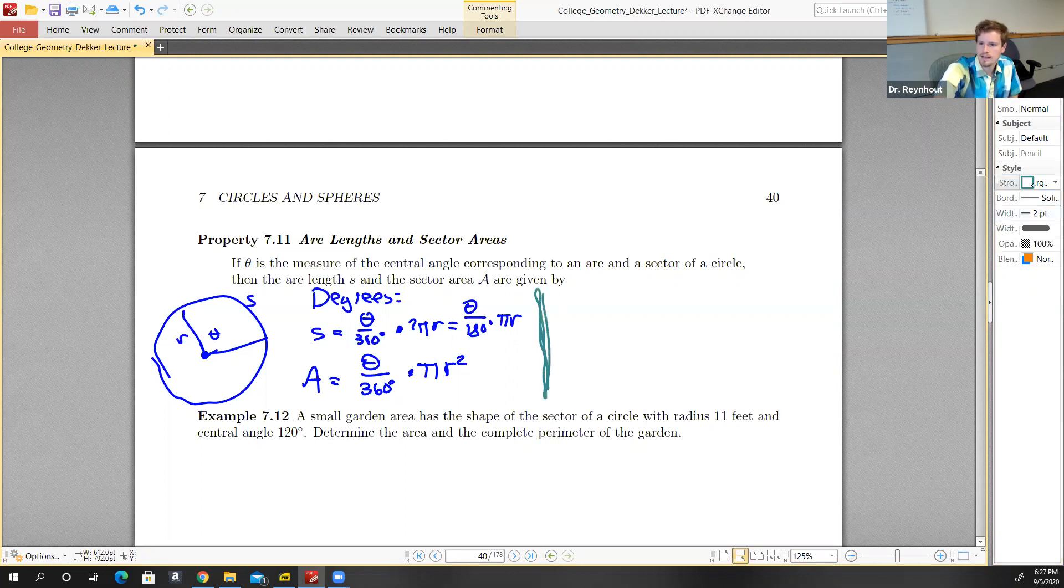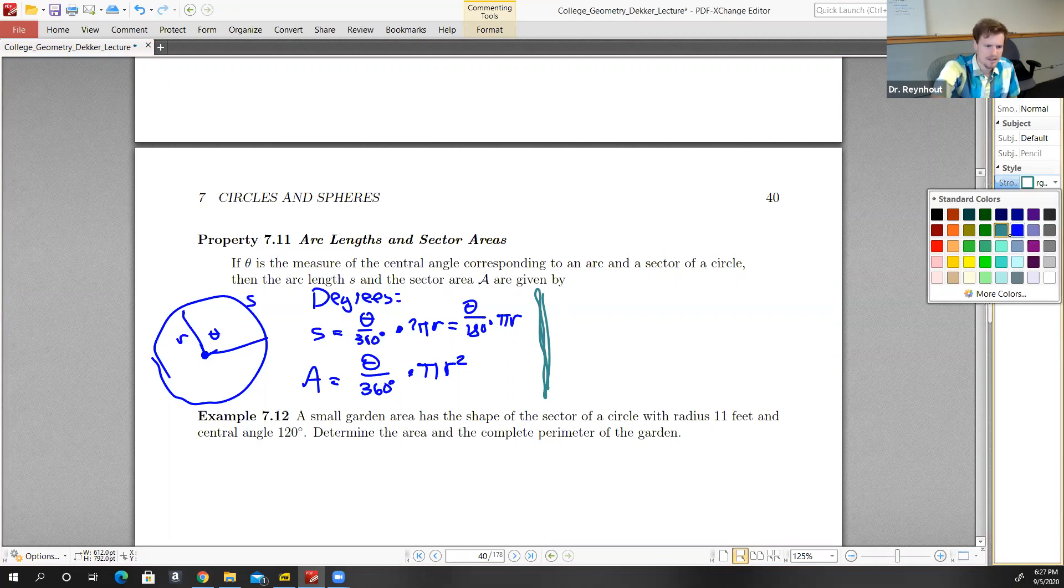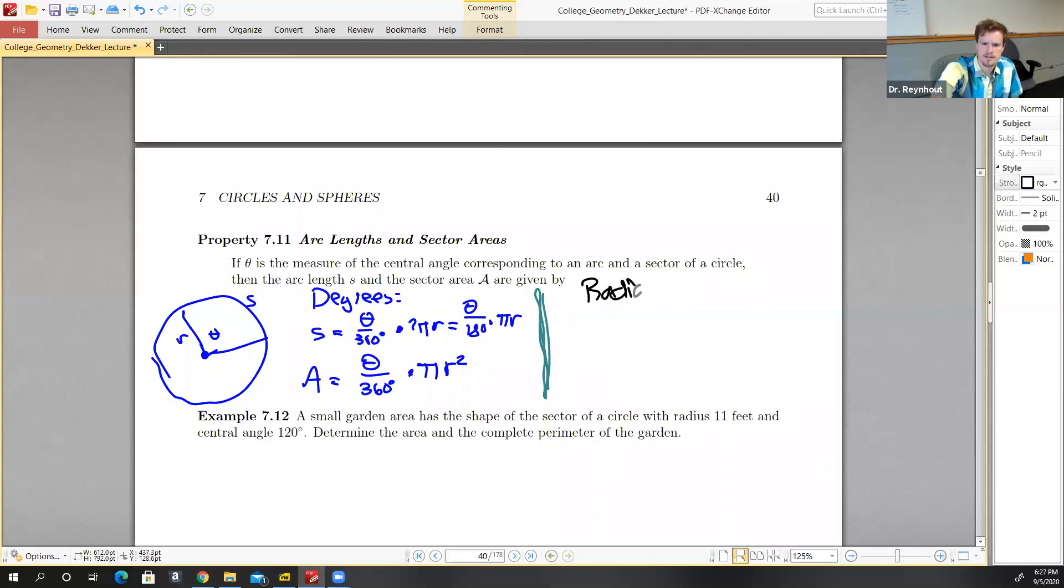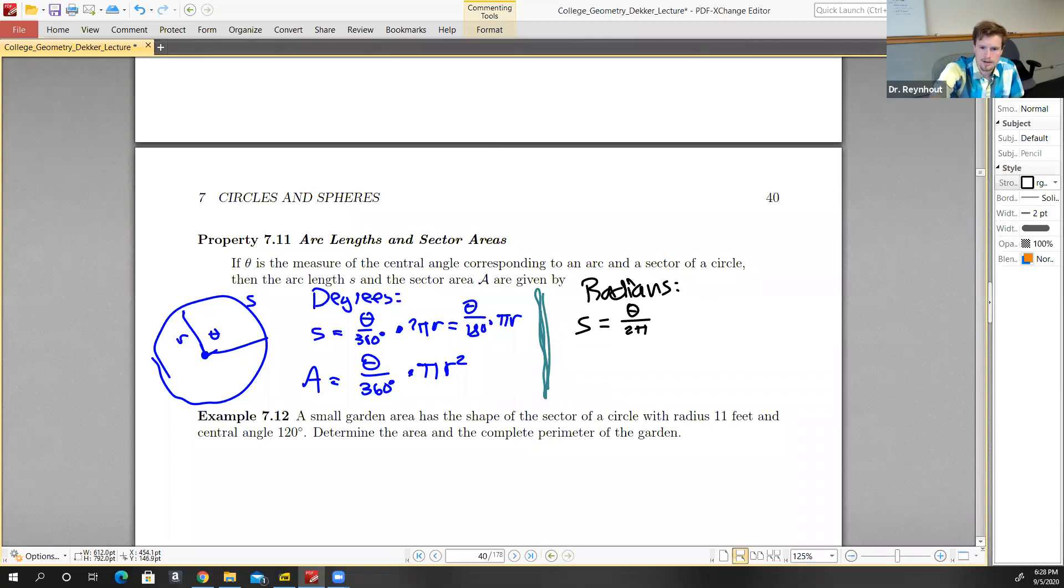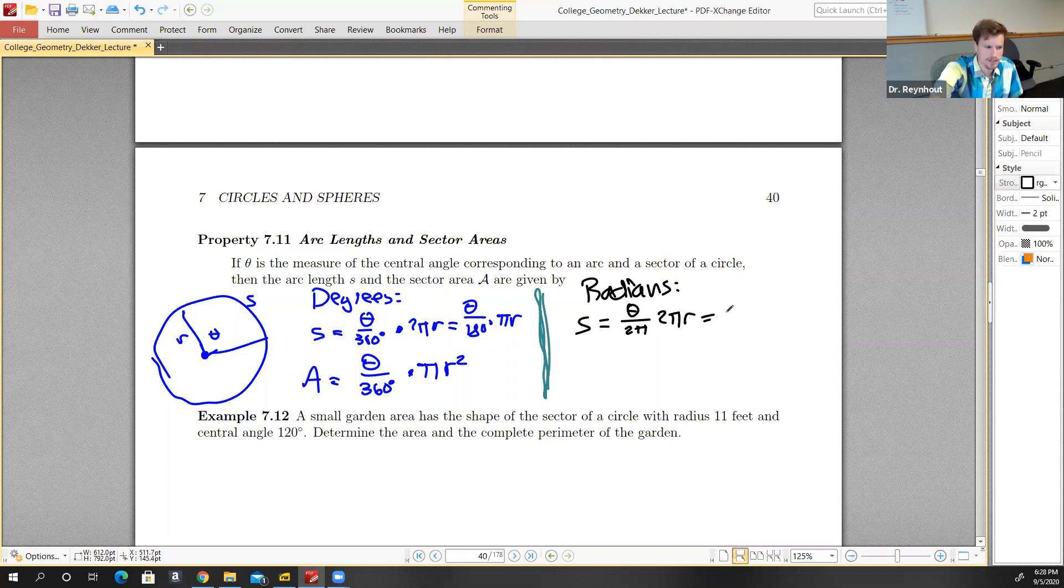If we're measuring in radians, things clean up a little bit nicer. The arc length is given by the angle measure in radians divided by 2π - that's the portion of the circle - times the arc length, or the circumference 2πr. So the 2π and 2π cancel to leave us with just θr. That cleans up nicer.